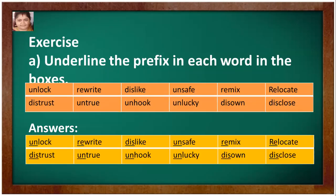Underline the prefix in each word in the boxes — these are the book exercises. Words given: unlock, rewrite, dislike, unsafe, remix, relocate, distrust, untrue, unhook, unlucky, disown, disclose. For example, unlock — 'un' is the prefix.